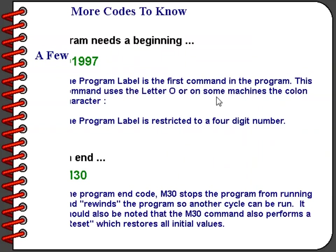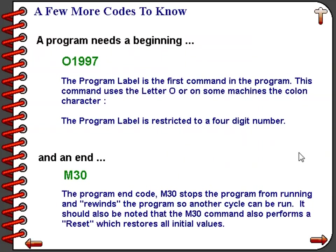Every program begins with a program label. The program label code is the letter O. Sometimes you'll see the character colon used for this purpose as well. The program label consists of the letter O or the colon character followed by a four-digit number. Note that this is a whole number and no decimal points are allowed.